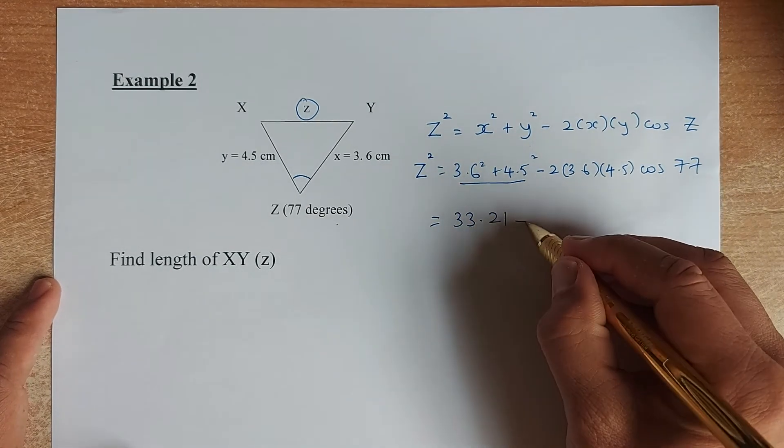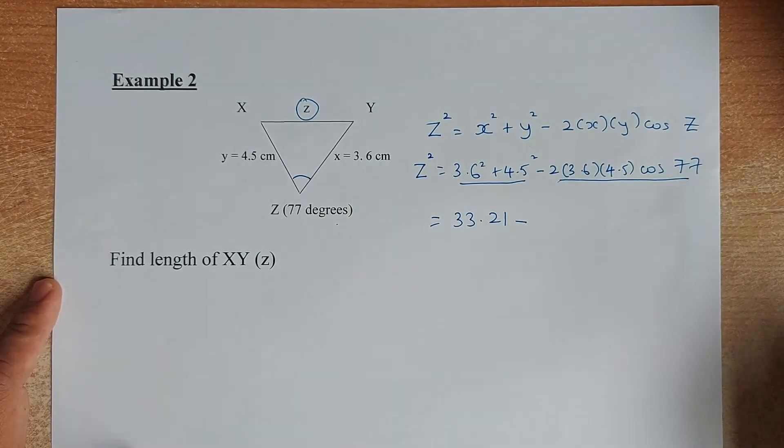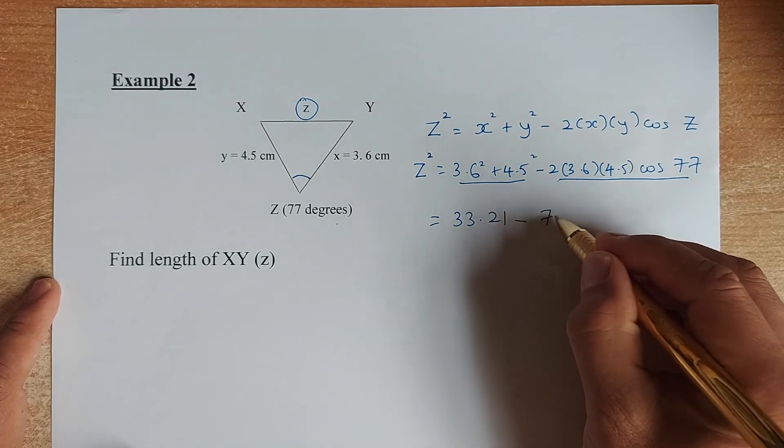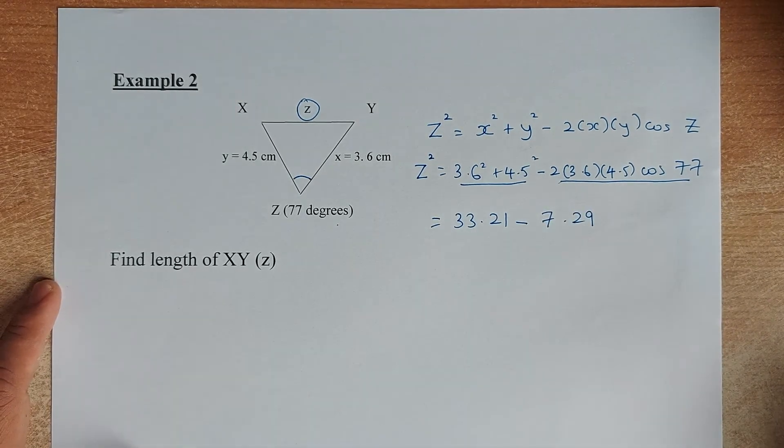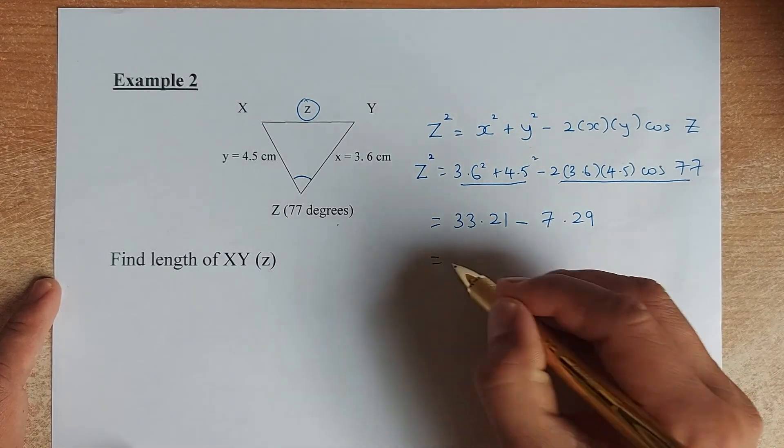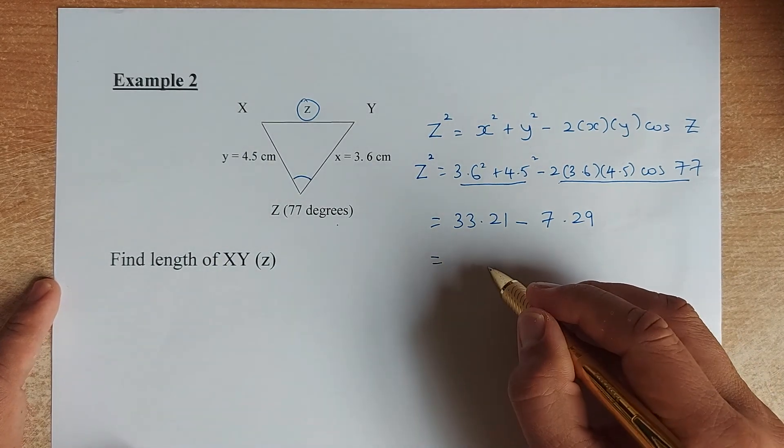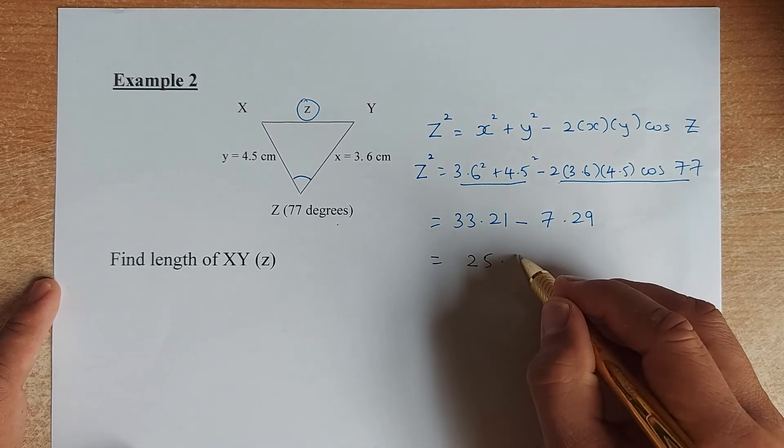Then we're going to do the second part. Put in the calculator 2 multiplied by 3.6 multiplied by 4.5 multiplied by cos 77. If I'm not wrong, the answer is 7.29. Then put in your calculator again, minus them, and the answer comes up to 25.92.